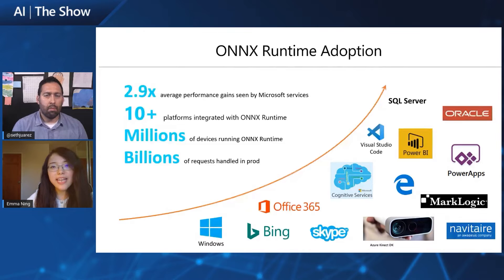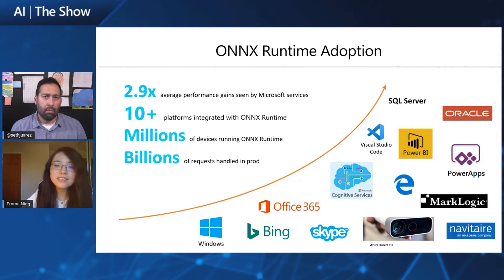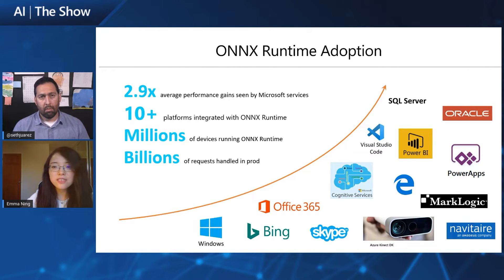From a production point of view, ONNX Runtime has been powering many flagship products like Office, Bing, and Cognitive Services, across all kinds of machine learning models including CNNs, RNNs, and Transformers. For model shifts in production, we have observed a 2.9x average performance improvement compared to their previous solution.